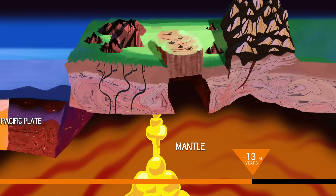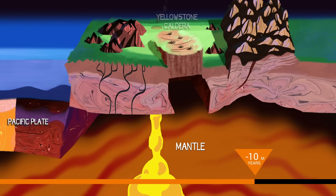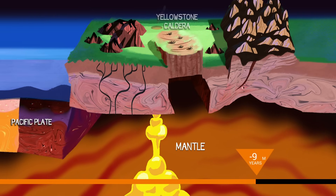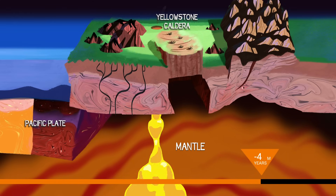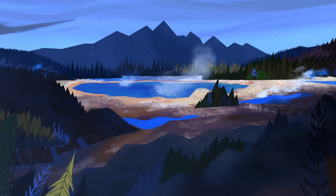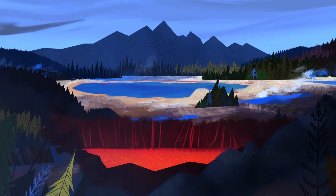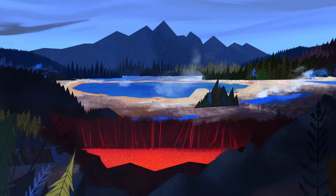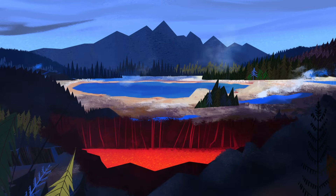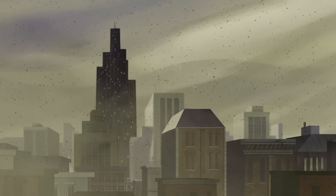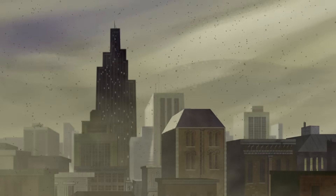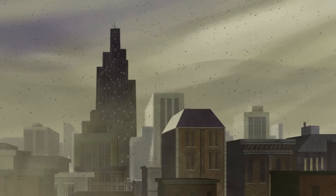Another 15 million years off the clock, and magma from the mantle burns a giant hole into western North America, periodically erupting onto the surface. Today, this hotspot feeds an active supervolcano beneath Yellowstone National Park. It hasn't erupted in the last 174,000 years, but if it did, its sheer force could blanket most of the continent with ash that would blacken the skies and threaten humanity.